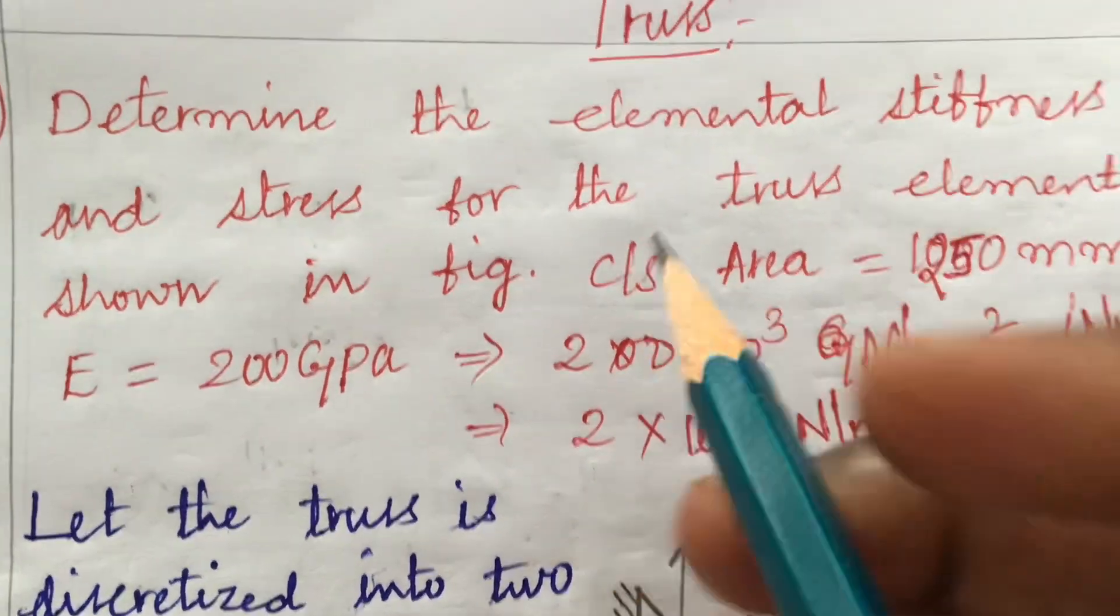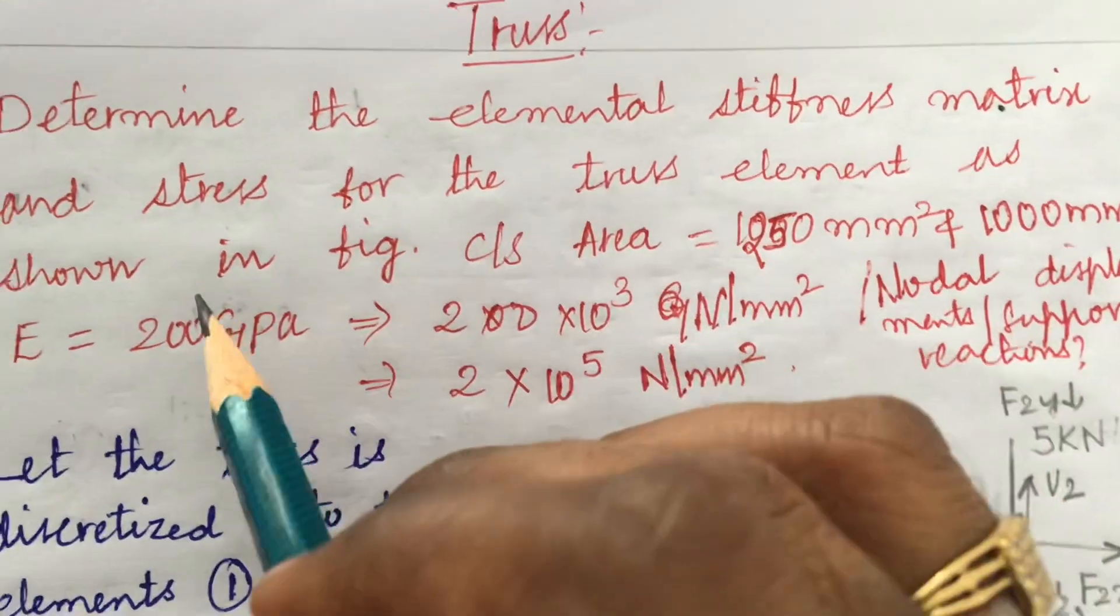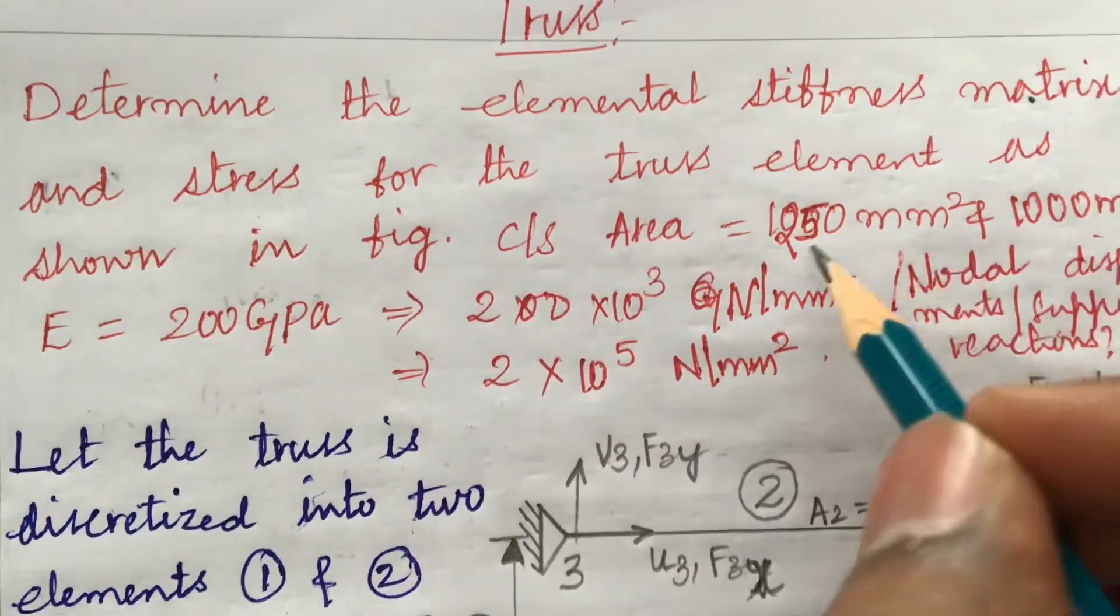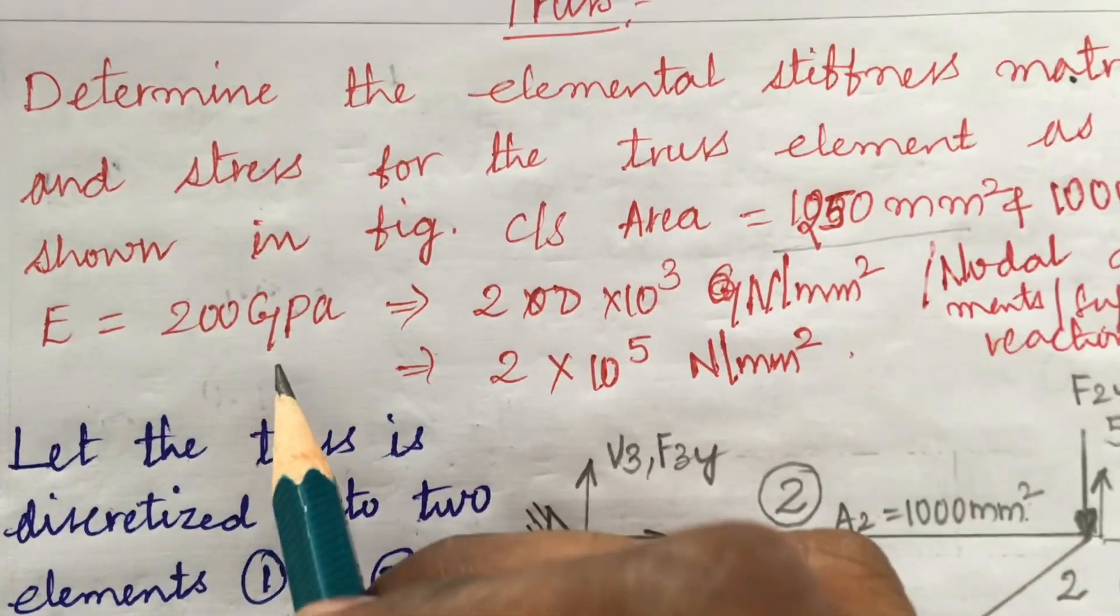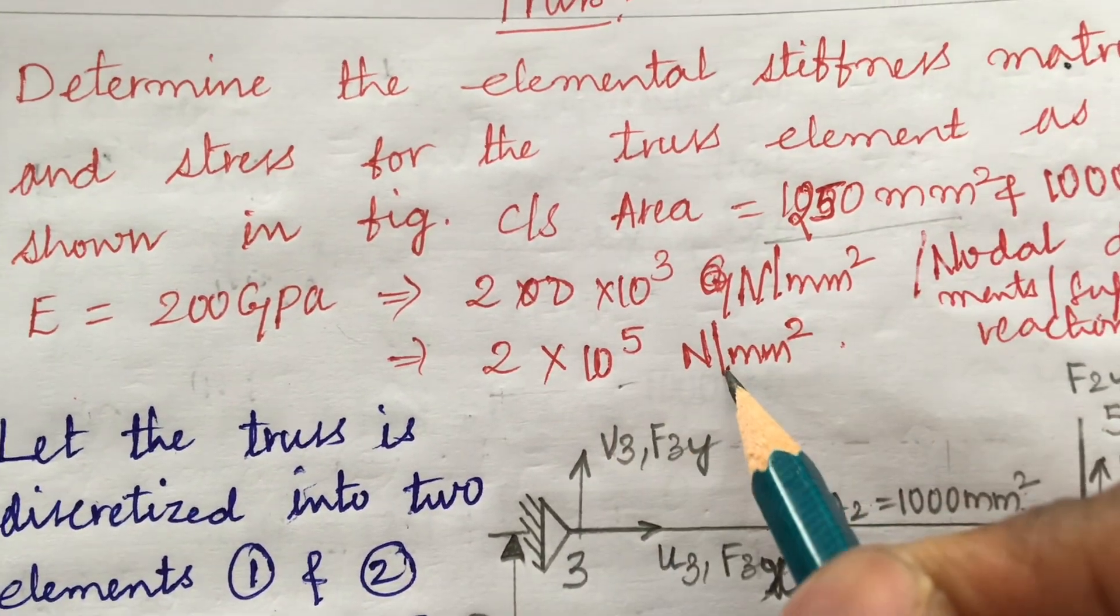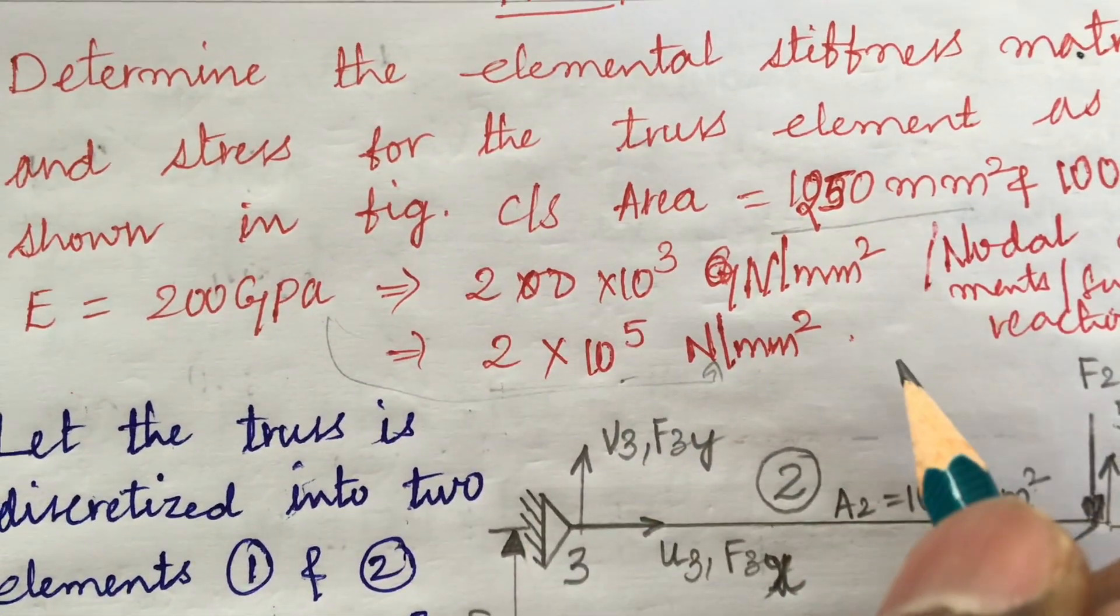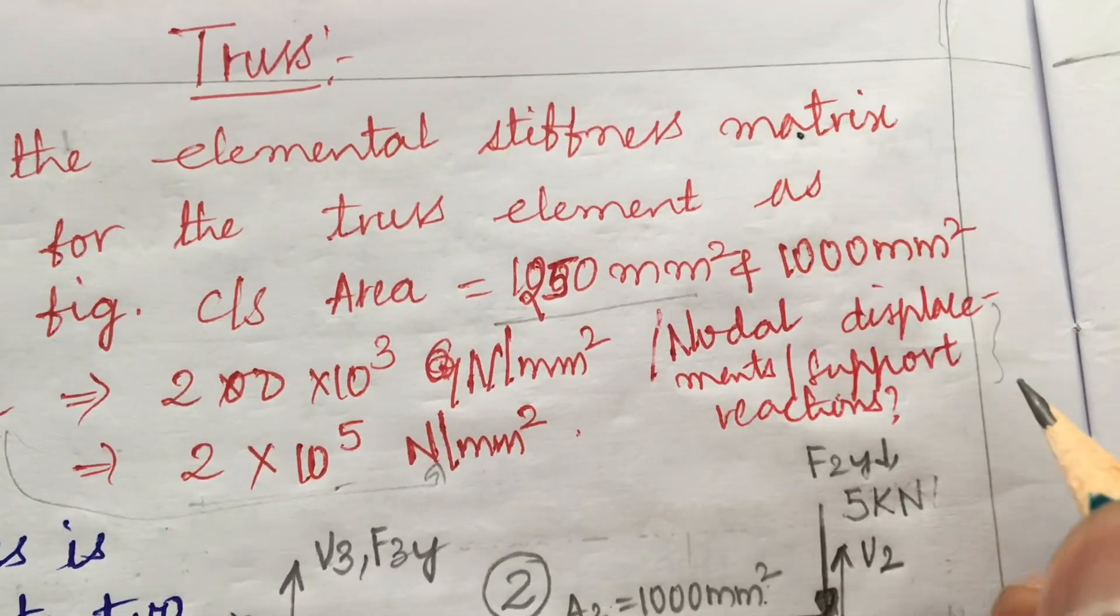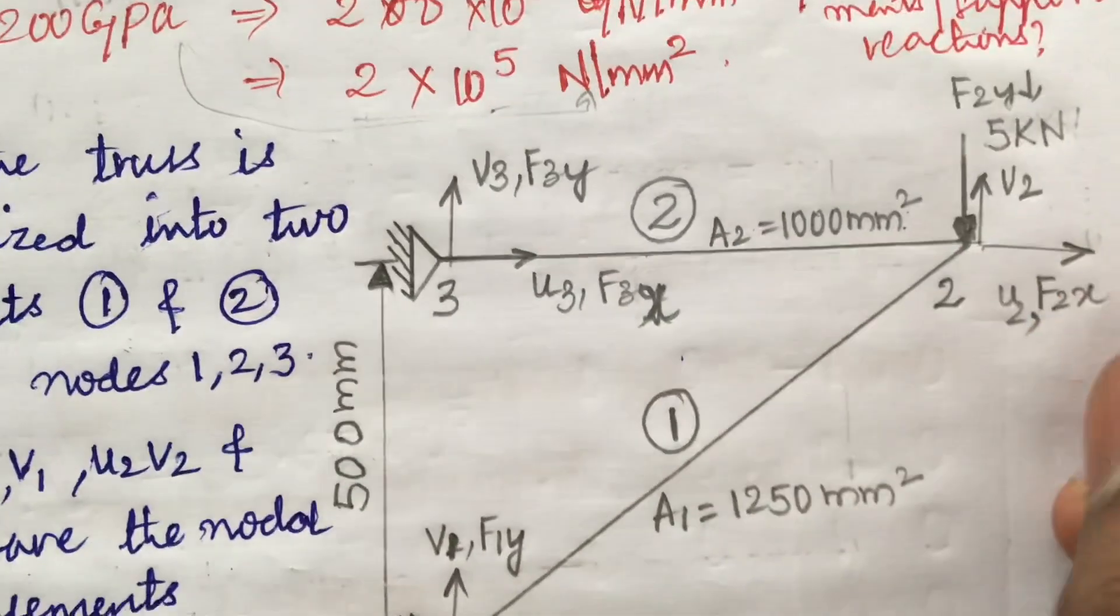I am going to work out even few more problems. Please try to concentrate and do work out the stiffness matrix of the truss. Determine the elemental stiffness matrix and stresses for the truss element as shown in the figure. If you haven't subscribed to my channel, please do subscribe. This is your Chandra Sheker Utkuri.